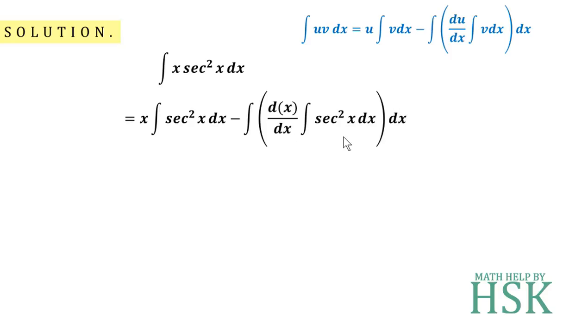So all said and done, I'm going to get this as integration of sec square x is tan x. d upon dx of x is 1, so I'm going to get x tan x minus 1 into tan x dx.